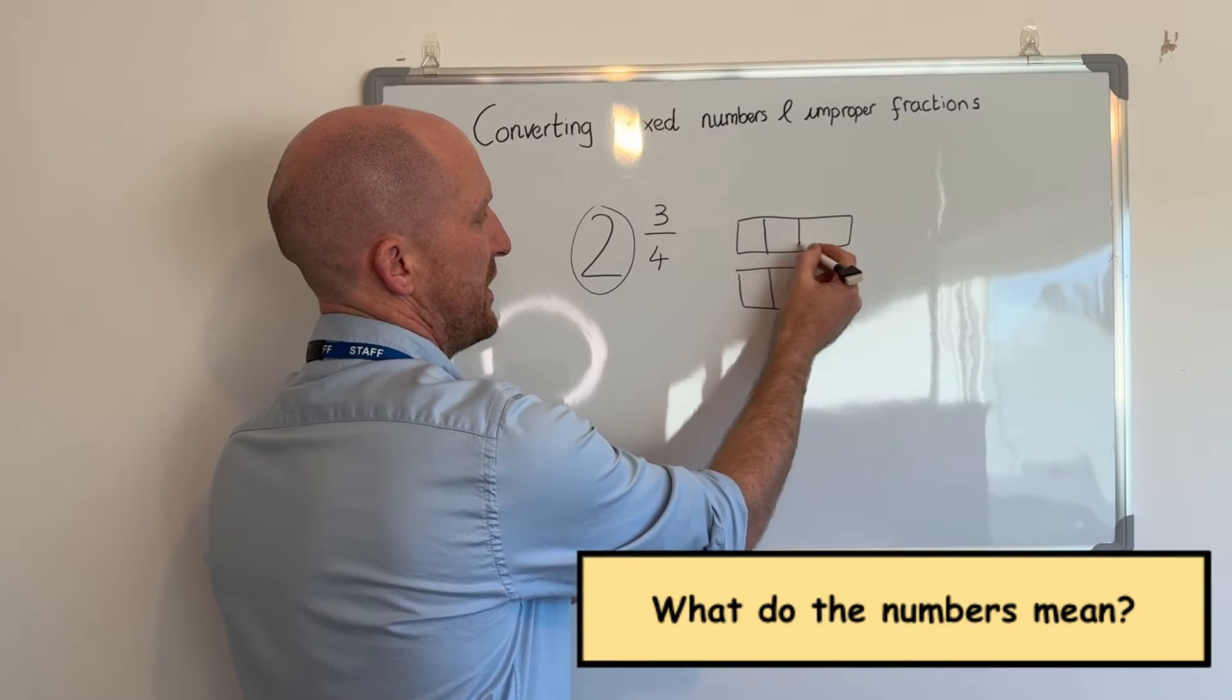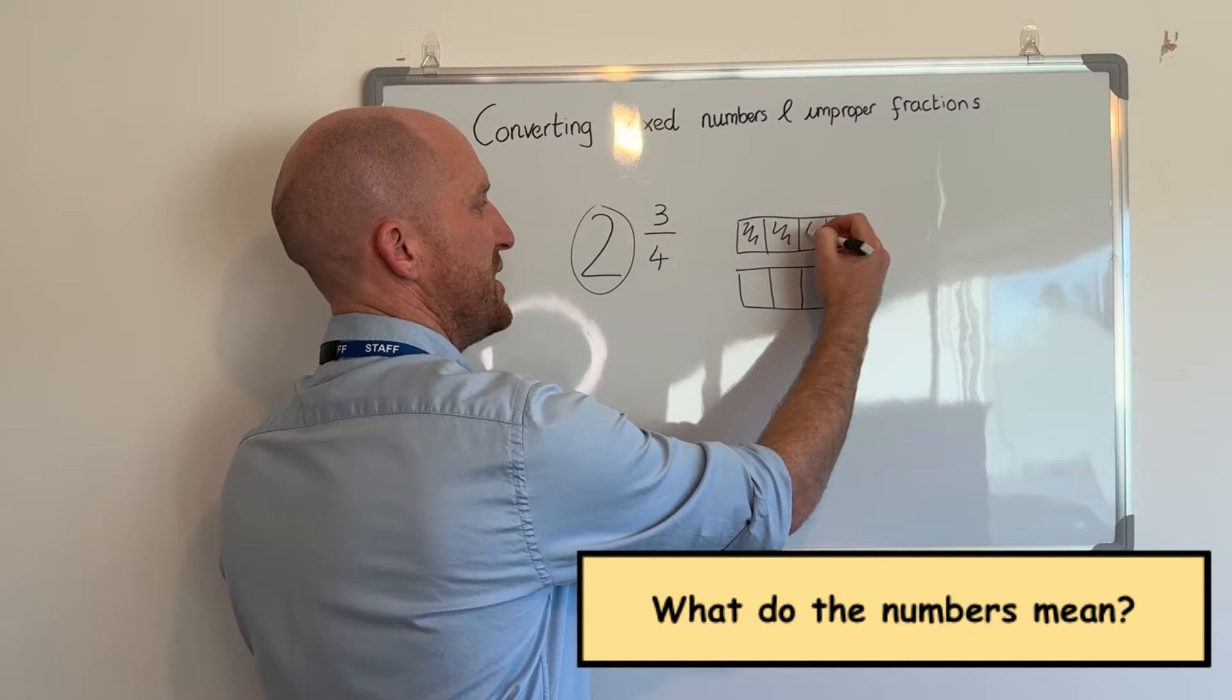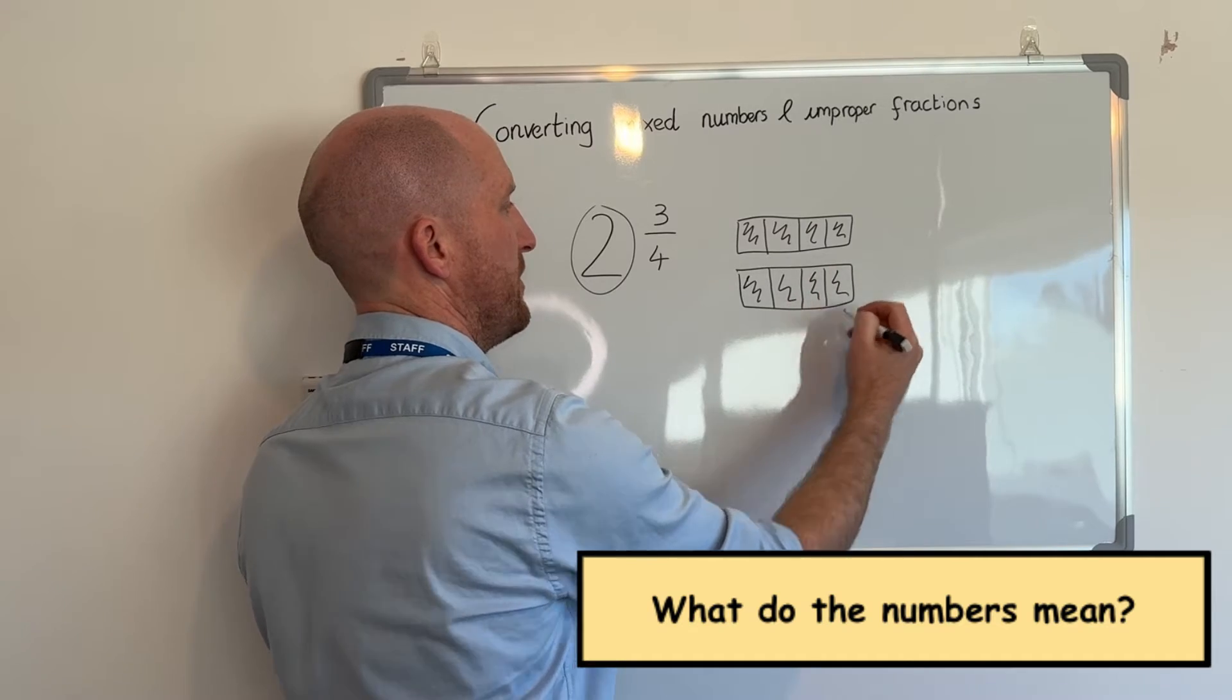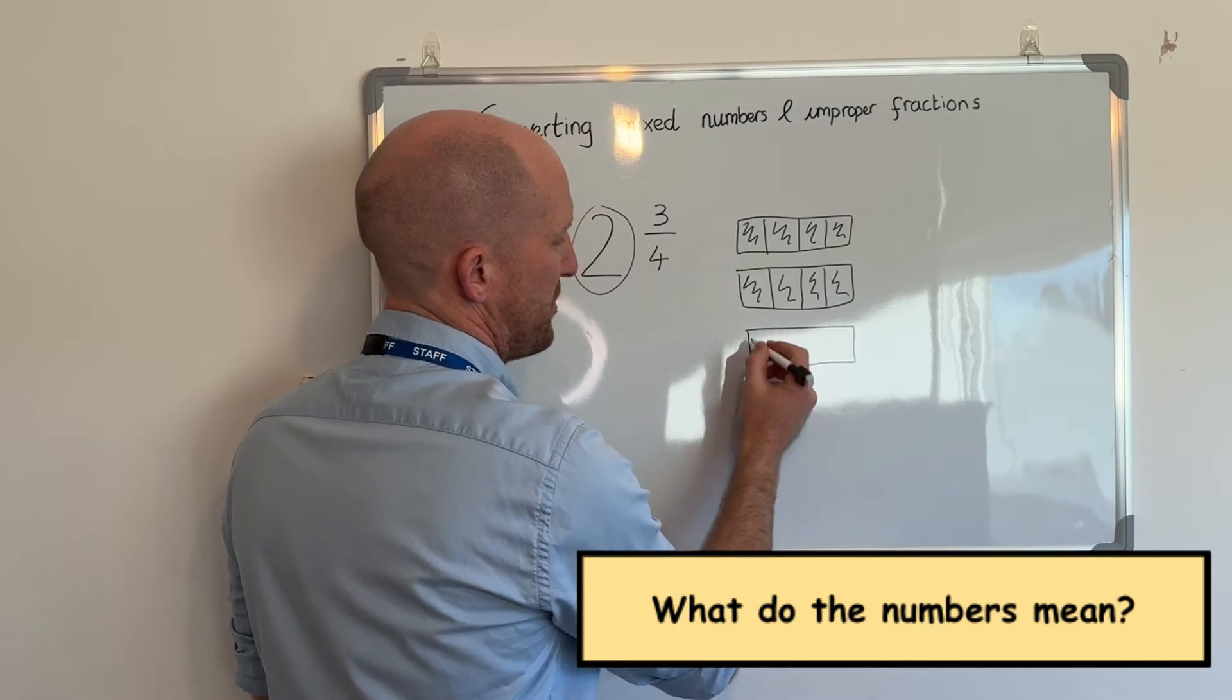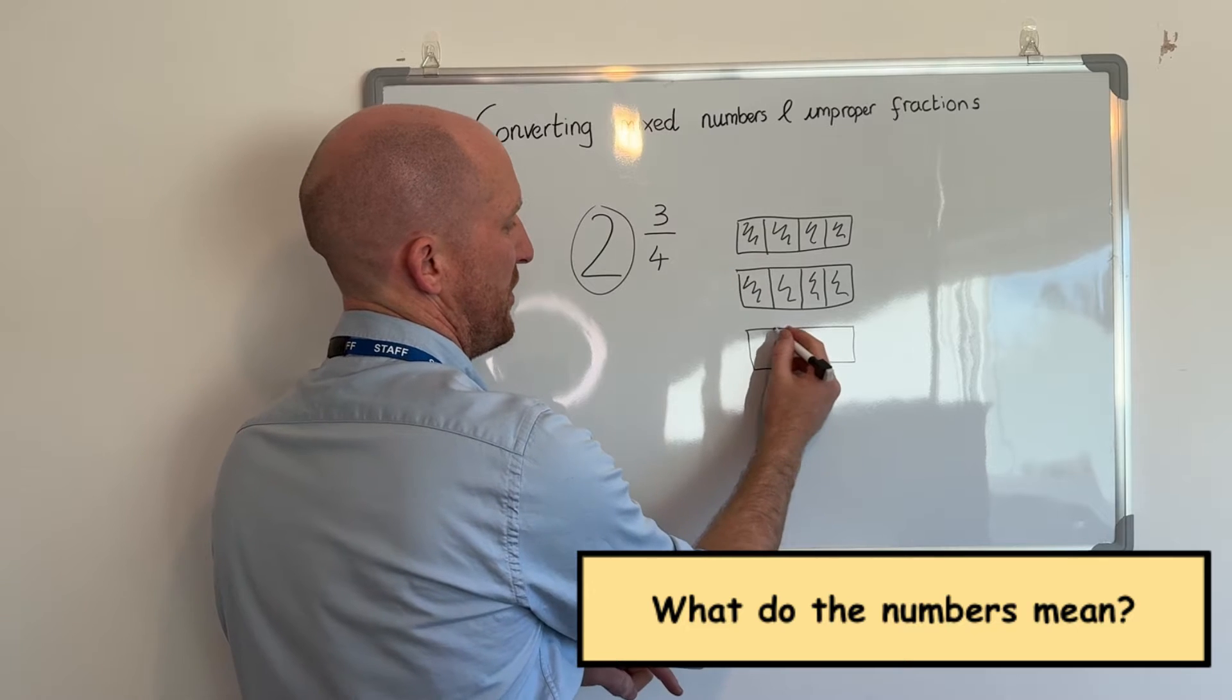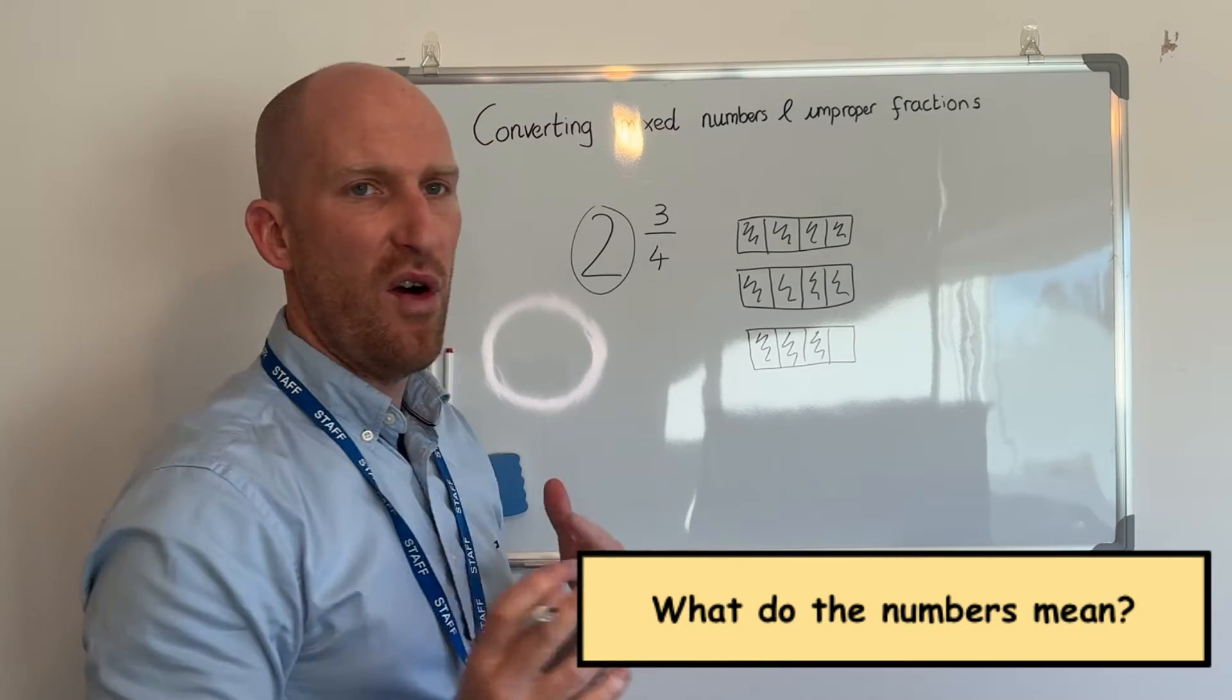Now the denominator this time is a four, so that shows me that these pieces have been chopped into four bits. So I have two whole ones and I have all of these pieces because they're whole ones. And I also have three quarters, so I also have some more pieces but not a full whole. I have three out of four of them.